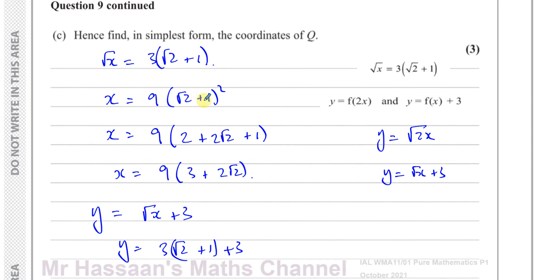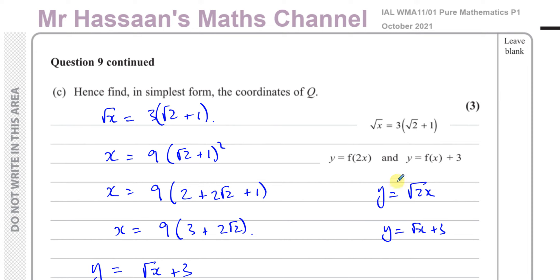Other questions from this paper — October 2021 P1 — can be found in the playlist appearing on screen. You can also find playlists on transformations and simplifying surds linked here. Subscribe to the channel by clicking the link. Thank you for watching and see you soon.